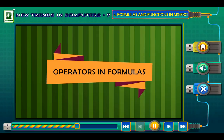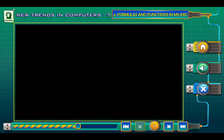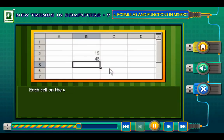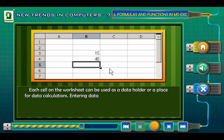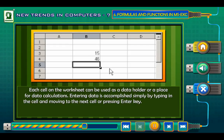Each cell on the worksheet can be used as a data holder or a place for data calculations. Entering data is accomplished simply by typing in the cell and moving to the next cell or pressing Enter key. With formulas, the equals sign indicates that the cell will be used for a calculation.